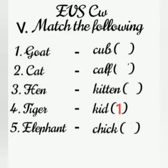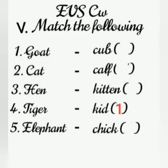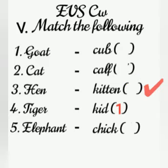Second one — what is the young one of a cat? Yes, kitten. So, write number two.